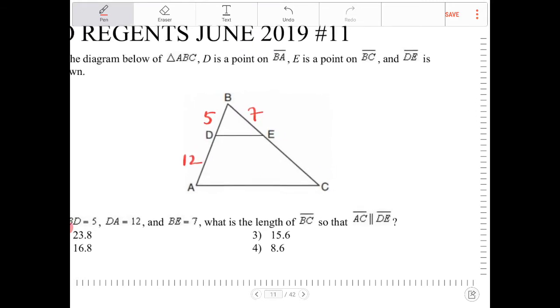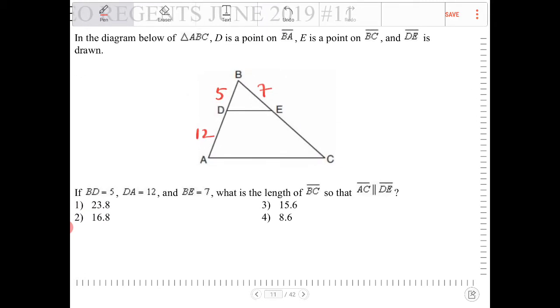So what they're asking for here is for you to use the side splitter theorem so that you can then show that these two sides are, or that AC and DE are indeed parallel.